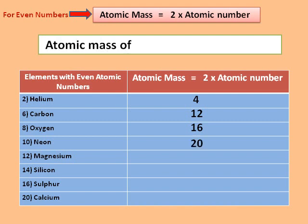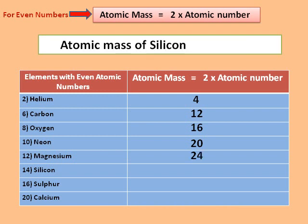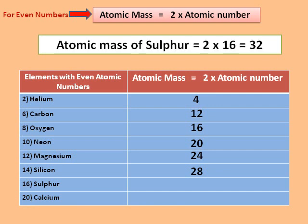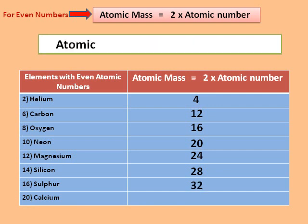Atomic mass of magnesium is equal to 2 × 12 = 24. Atomic mass of silicon is equal to 2 × 14 = 28. Atomic mass of sulfur is equal to 2 × 16 = 32. And finally, atomic mass of calcium is equal to 2 × 20 = 40.